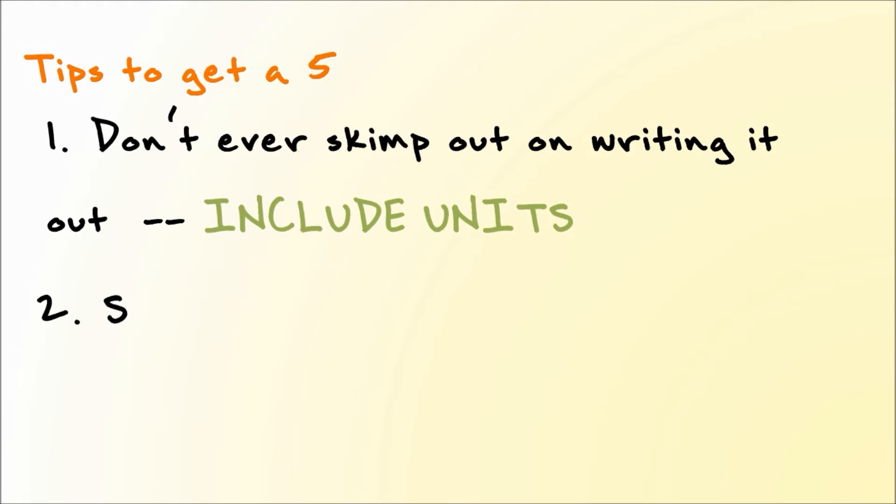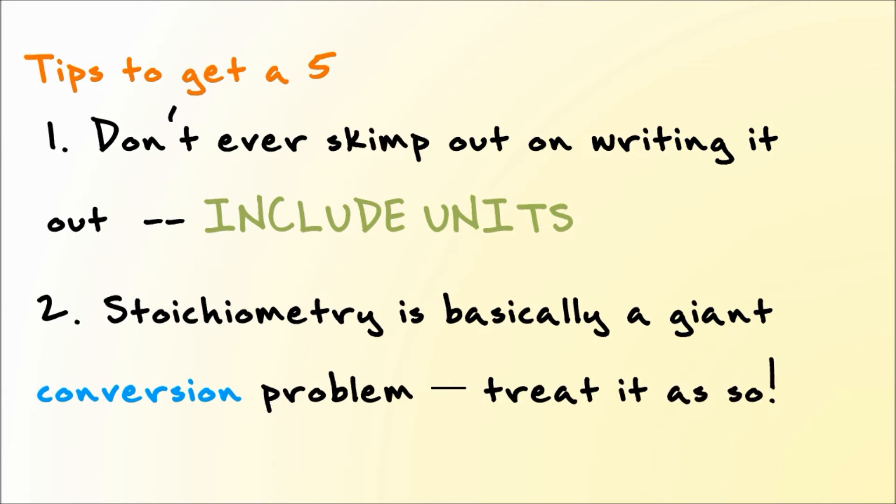And if you'll see in the next one, stoichiometry is basically a giant conversion problem. So if you have units, it'll help you to treat it as a conversion problem, which is basically what stoichiometry is, with an addition of adding and subtracting every so often if you need to take away or percent yield. Some of that stuff is a little more than a conversion problem, but for the most part it's a conversion problem. And you have to remember that stoichiometry is extremely important, because it's basically all of chemistry.